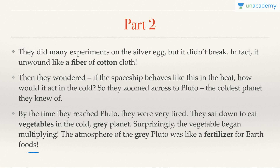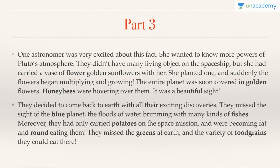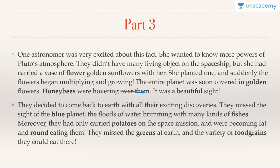One astronomer was very excited about Pluto's powers. Since they had no other living objects, she had carried golden sunflowers with her. She planted one and suddenly the flowers began multiplying, covering the entire planet in golden flowers. Honey bees started hovering over them — so golden revolution is related to flowers, fruits, horticulture, and honey.